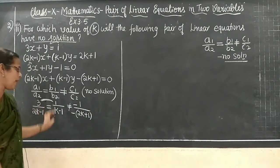Whichever method they mention, use that method. If they do not mention any method, you can use whichever method you find easiest. Now let us solve by cross multiplication. The question is: 8x + 5y = 9, and 3x + 2y = 4.